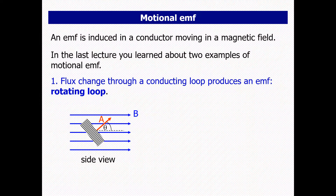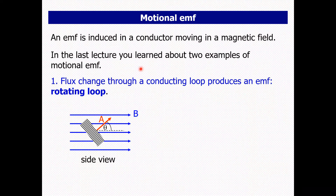An EMF is induced in a conductor moving in a magnetic field. We discussed in the first lecture how EMF is generated, and when we discussed the electric generator or electric motor, we also discussed a special type of EMF which we called the motional EMF. Now we will talk about the motional EMF and the special cases in which conditions and processes we can generate it.